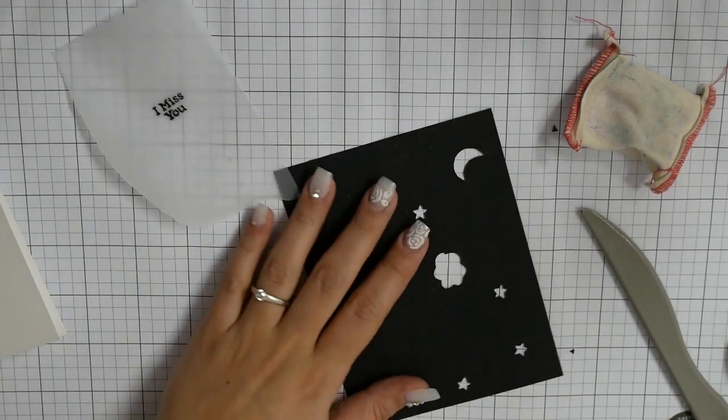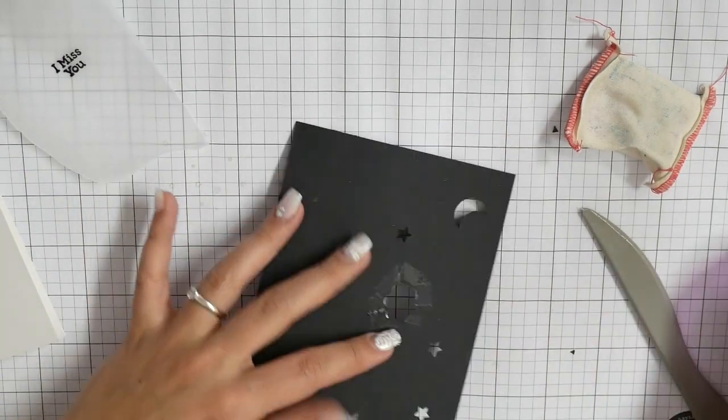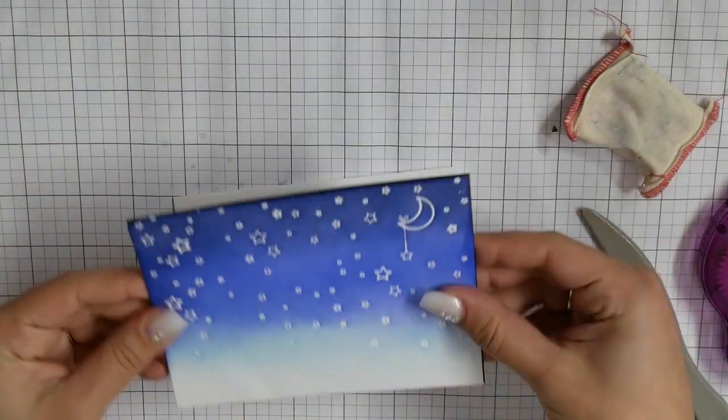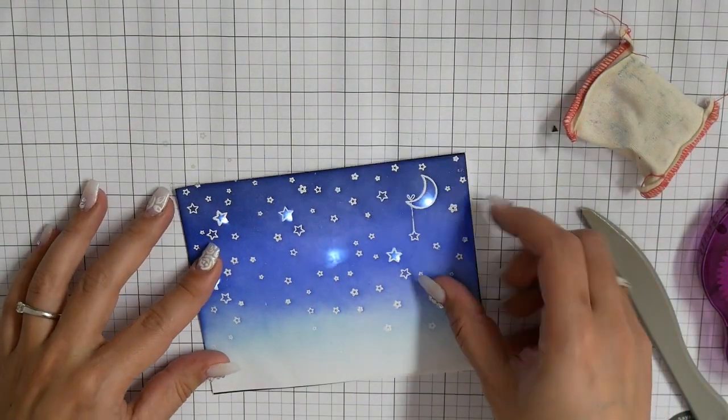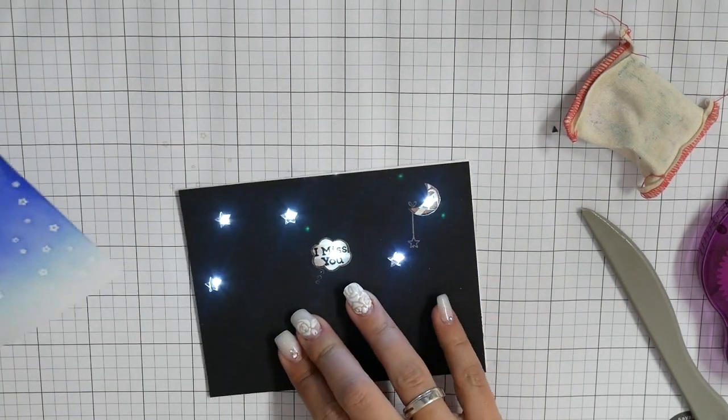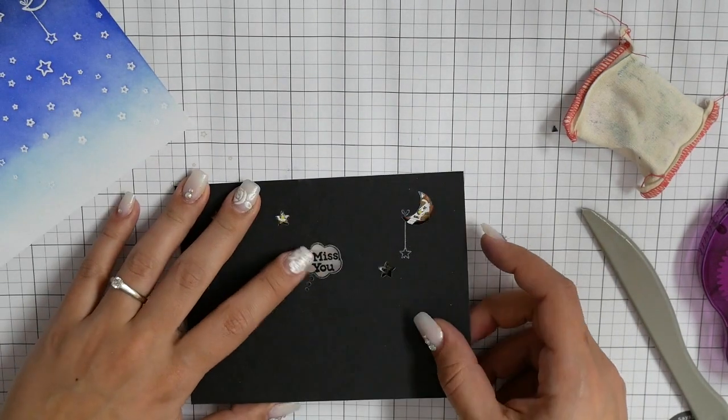And for my thinking bubble, I stamped the sentiment on some vellum with VersaMark ink pad. I heat set it and used black embossing powder. In theory, everything was working really well.